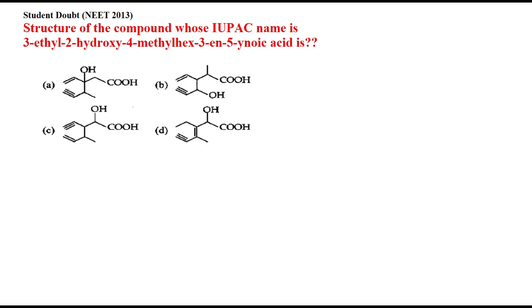We won't look at the options first. I'll draw a rough diagram of this structure. Now what I have to do is mark the functional group first. The functional group is '-oic acid', so I'll write oic acid here — that means carboxylic acid on position one.